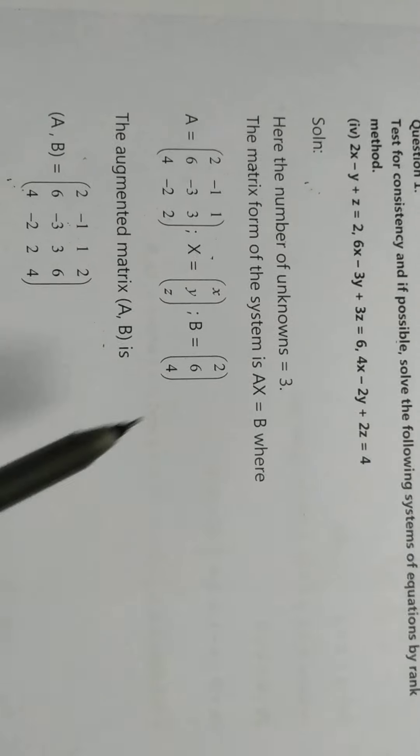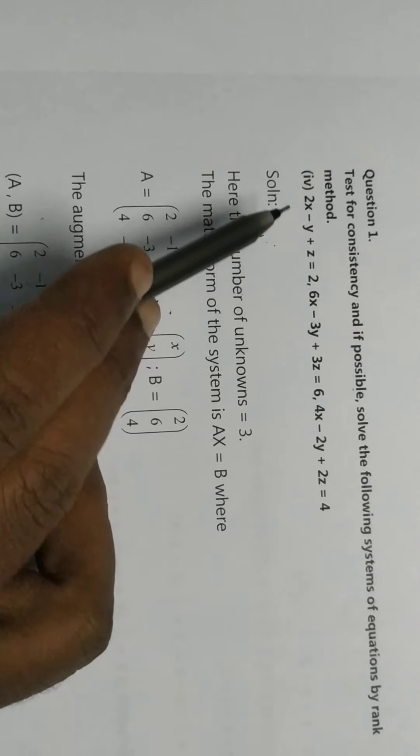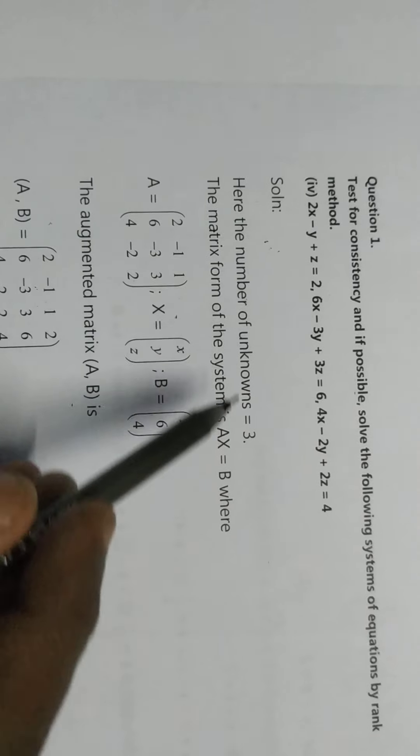Solution: Here first, the number of unknowns are 3 - X, Y, Z. So, number of unknowns are 3.